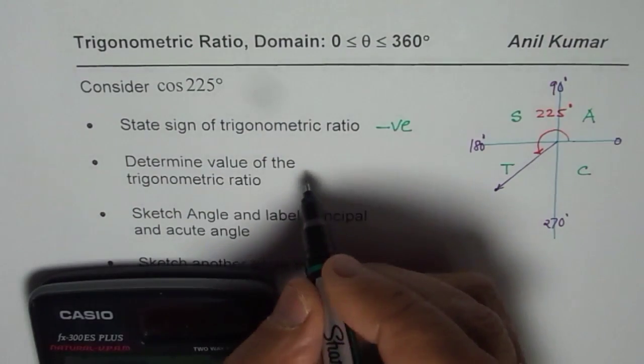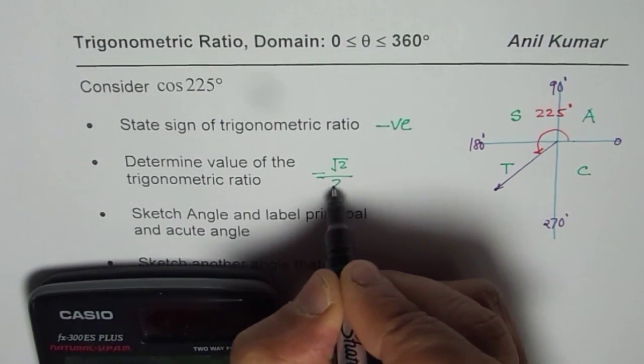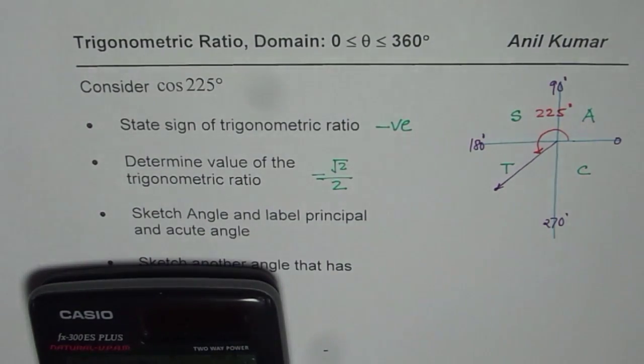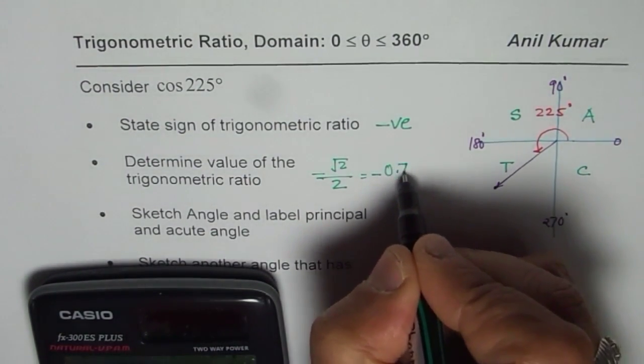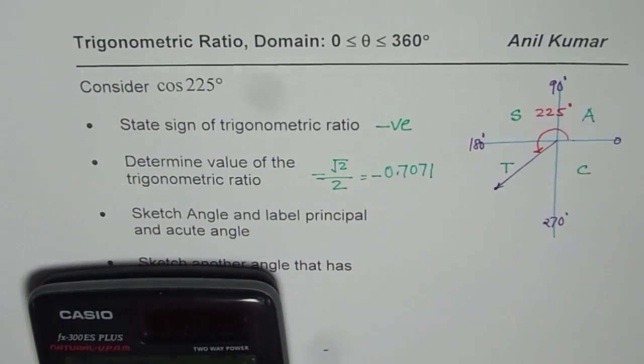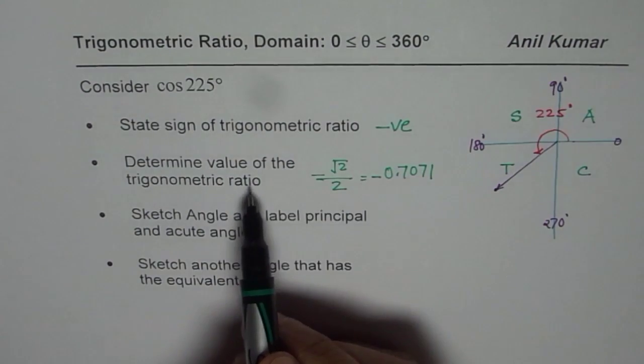So, let us write that value. Determine value of the trigonometric ratio. So, it is minus square root 2 over 2. Or, if required in decimals, we can change and write this as equal to minus 0.7071. So, either way, you can write down this value using calculator.